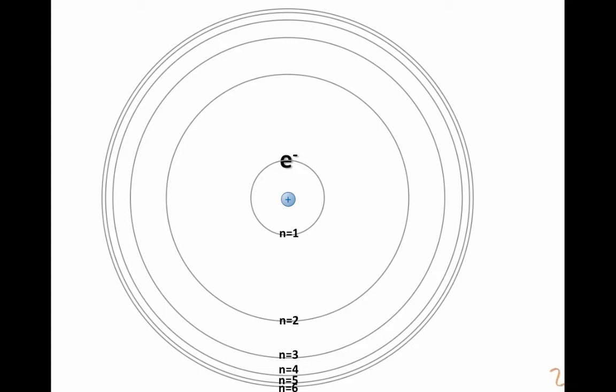This electron can be moved to a higher energy orbit. In this case, the electron has jumped up to n equals 4. Would that process be an endothermic or an exothermic process? Correct. This is endothermic because energy was absorbed. This puts the electron in what's known as an excited state.